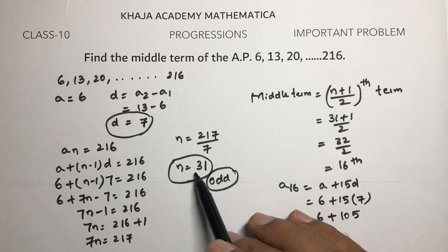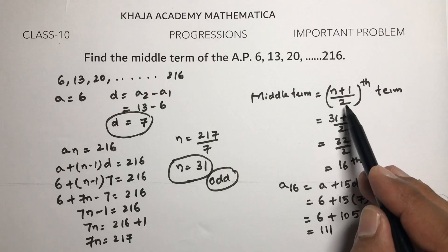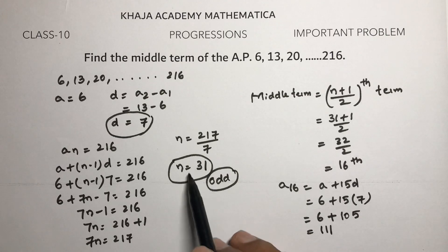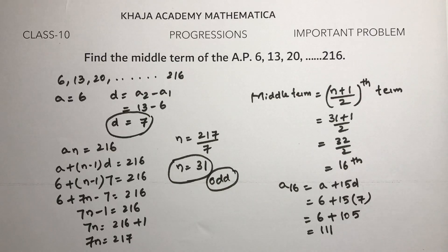For odd number of observations, the formula is (n+1)/2. But if it's an even number of terms, we'll get two middle terms.